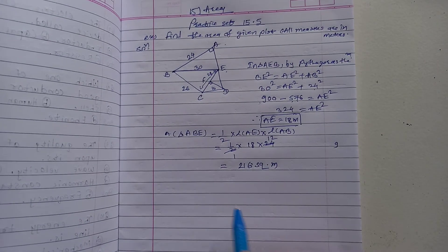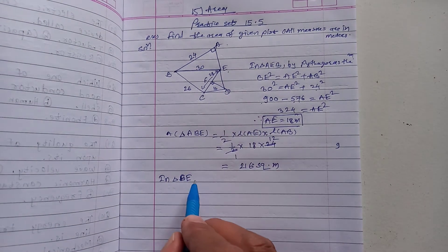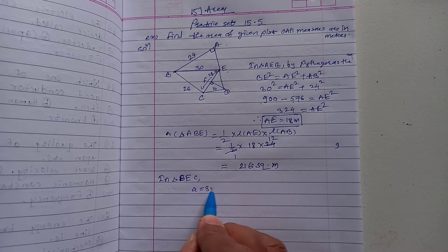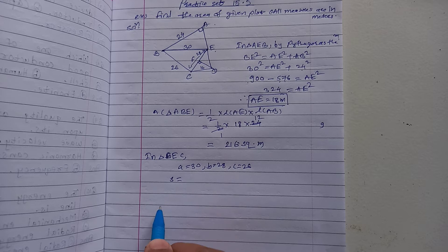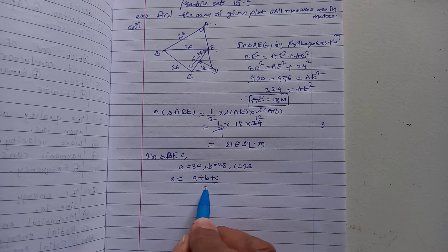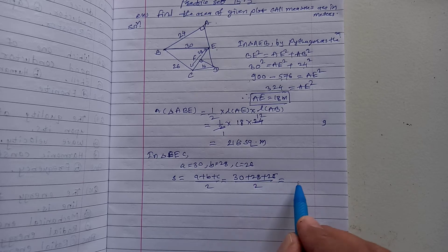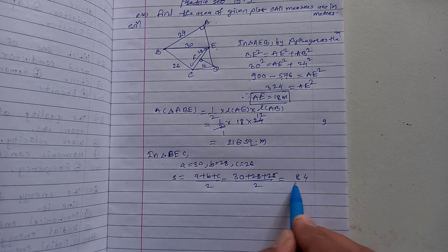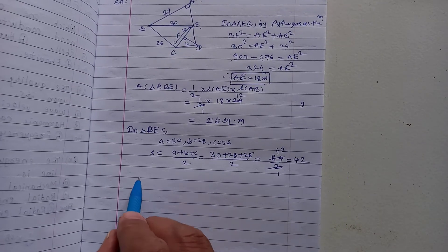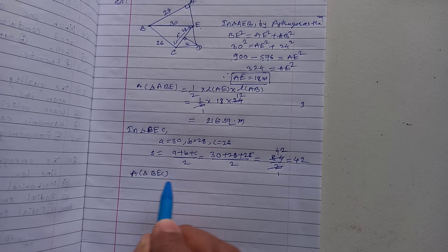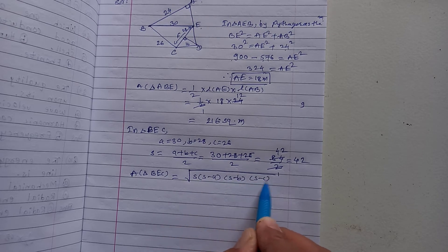Now find the area of triangle BEC. The sides are: a equals 30, b equals 28, c equals 26. Using Heron's formula, first find the semi-perimeter S equals (a plus b plus c) divided by 2. So S equals (30 plus 28 plus 26) divided by 2 equals 84 divided by 2 equals 42.